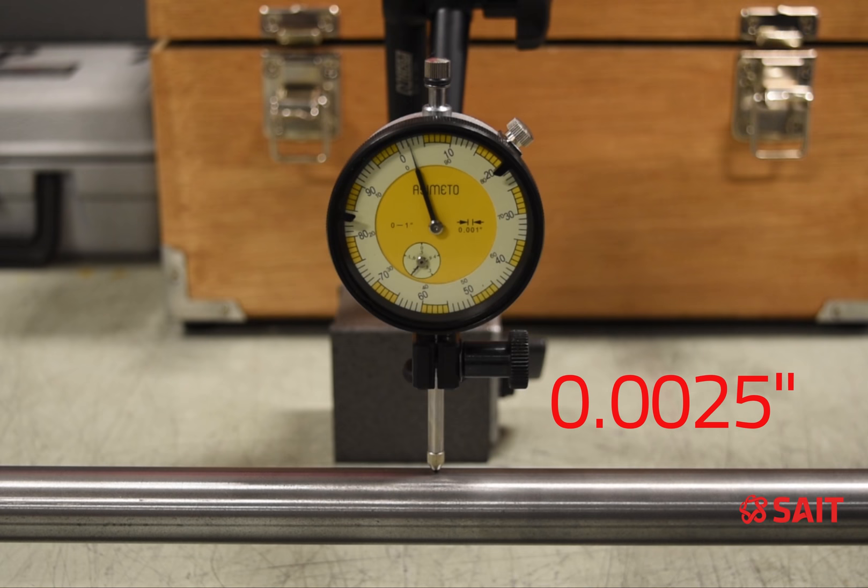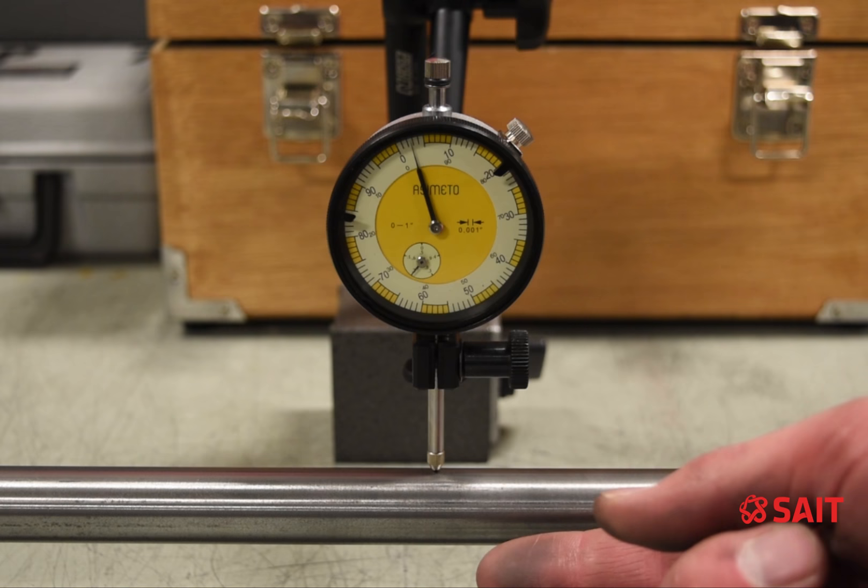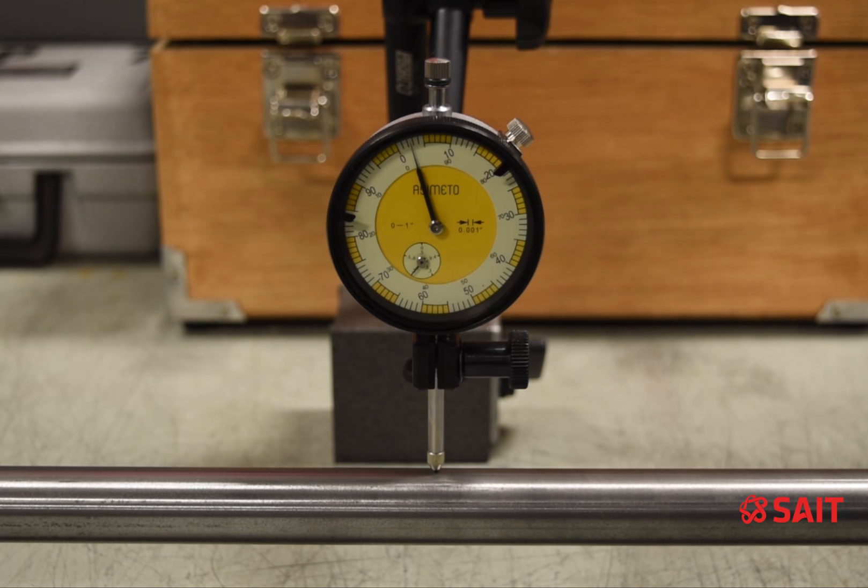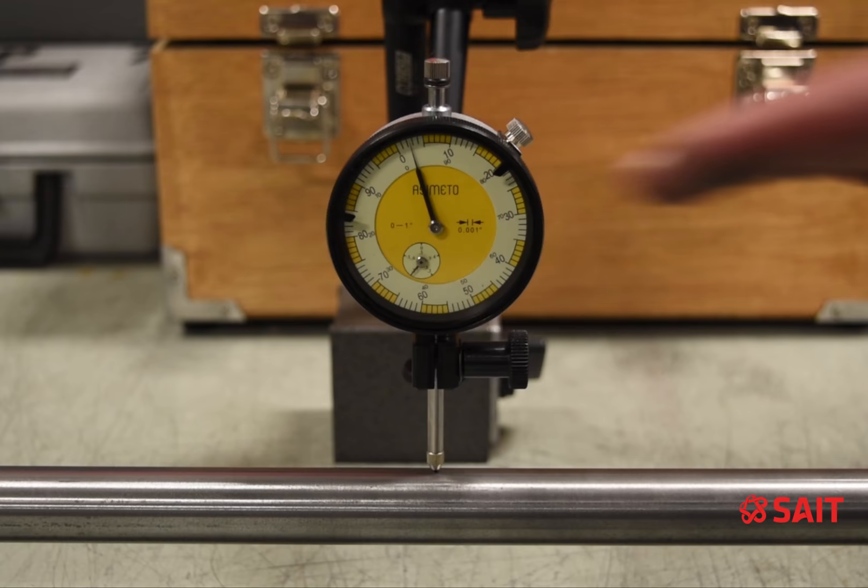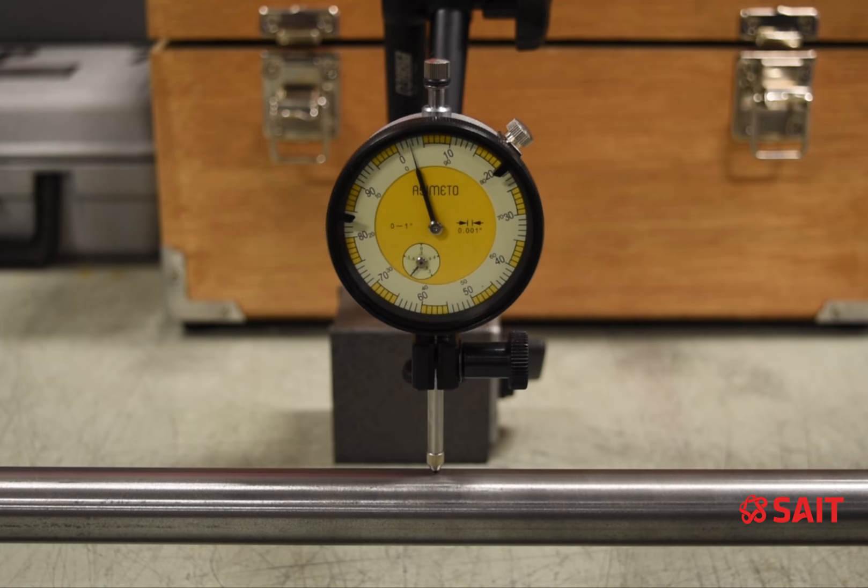The first thing we need to do is find the high spot of the shaft or where the shaft bows upward. When the dial indicator plunger is moved in towards the dial, we get a positive reading. So in this case, about here is the highest point or where the shaft is bowed in an upward direction.